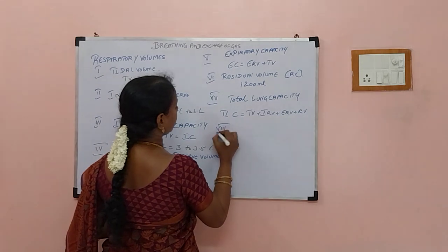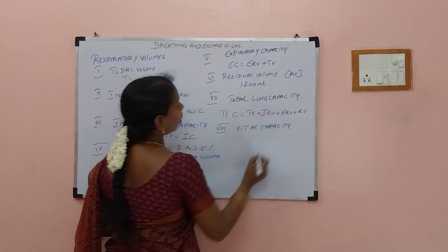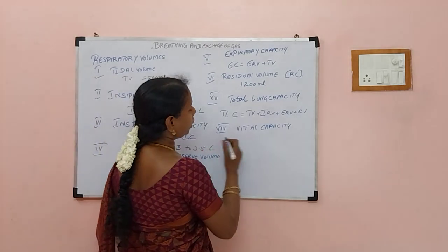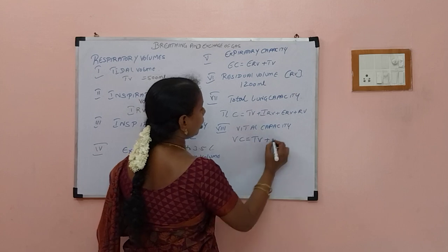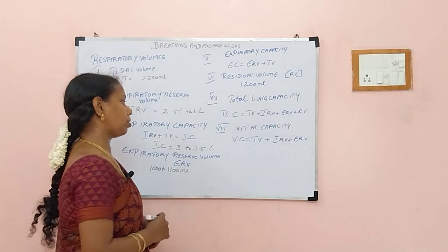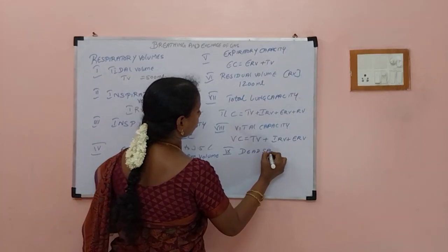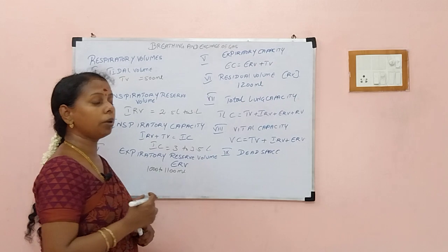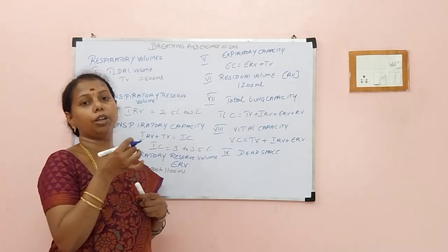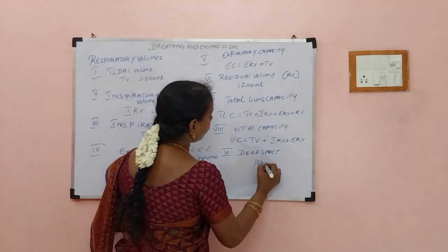Then we have vital capacity — the maximum volume of air that can be inhaled after forceful exhalation — which is obtained by adding TV plus IRV plus ERV. We also have dead space, where there is no exchange of gases; only air passes in and out. The volume of dead space is around 150 ml.